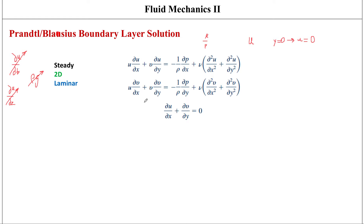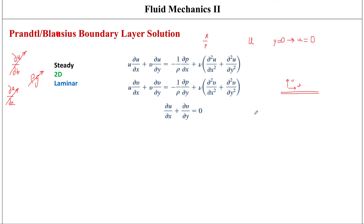I'm not going to go into too much mathematical detail, but I'll give an overview of how Blasius used this technique. The boundary layer is thin, meaning the component of velocity normal to the plate, V, is a lot smaller than the component parallel to the plate, U. The other key point is that the rate of change of any parameter across the boundary layer is going to be a lot greater than along the flow direction.